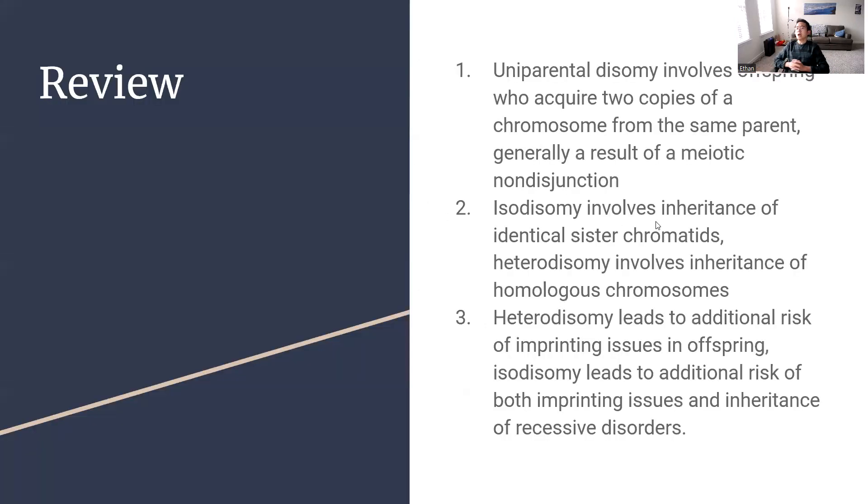So, as a review of everything we talked about today, what did we cover? Uniparental disomy involves offspring who acquire two copies of a chromosome from the same parent. It's generally a result of meiotic nondisjunction. Isodisomy involves inheritance of identical sister chromatids. Heterodisomy involves inheritance of homologous chromosomes. And heterodisomy leads to additional risk of imprinting issues in offspring, while isodisomy leads to additional risk of both imprinting issues and inheritance of recessive disorders. I want to add that towards the end, we talked about isodisomy only in relation to these inheritance of recessive disorders, but you could also have the same issues as you did in heterodisomy. Because you still have two identical sister chromatids that only come from one parent, so that sex-specific, biological sex-specific imprinting that occurs during gametogenesis in that parent is going to happen on both those sister chromatids, meaning that the offspring will also get the same identical sets of methylation instead of different methylation on each copy to allow for only one gene to be active and one to be silenced.